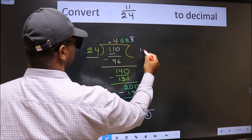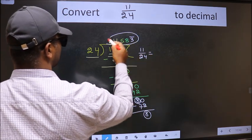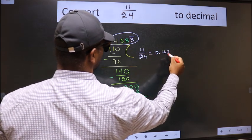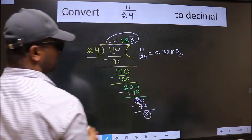Therefore decimal of 11 by 24 is this one: 0.458 bar on this number. This is our answer.